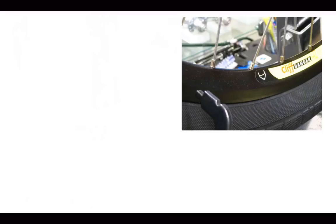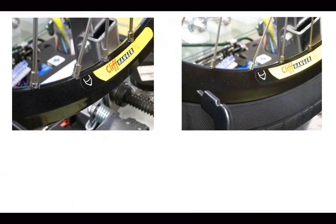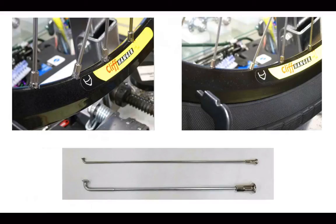Here is a Velocity Cliffhanger rim laced up with bicycle spokes and nipples. This is the same rim using motorcycle spokes and motorcycle nipples, and here is a comparison of the two.